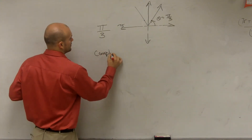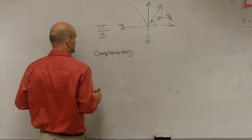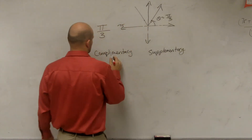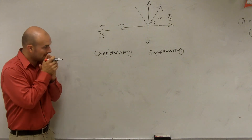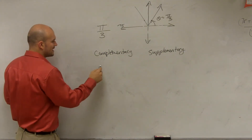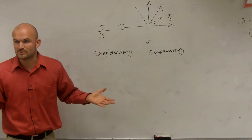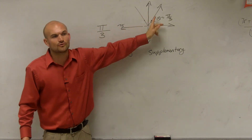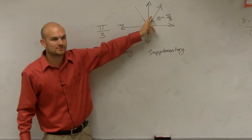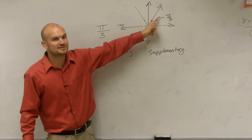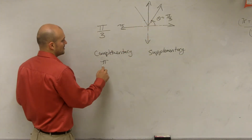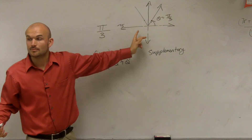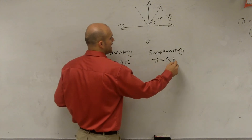So now we need to remember what complementary and supplementary mean. When you have two angles that add up to 90 degrees — but when we're talking about radians, two angles that add up to 90 degrees is π over 2. So you could say π over 2 equals one angle plus another angle. And supplementary was two angles that added up to 180 degrees, but in radian terms that's π. So that means π equals one angle plus another angle.